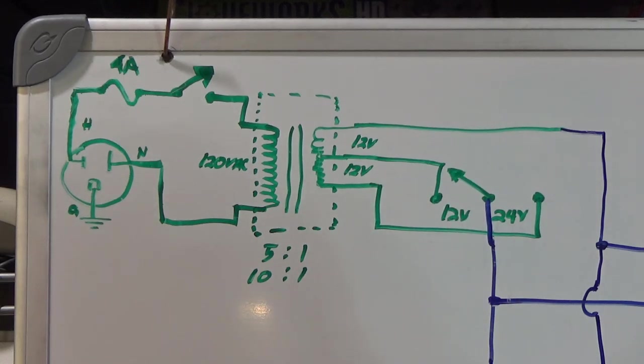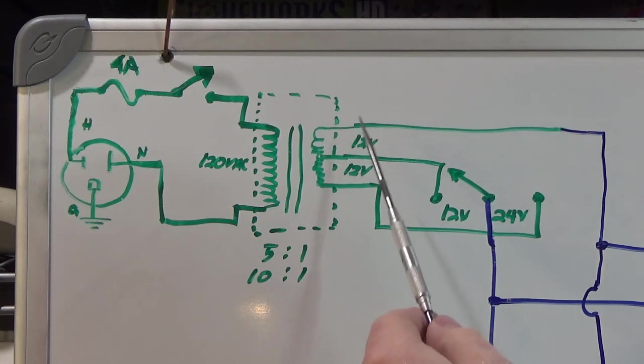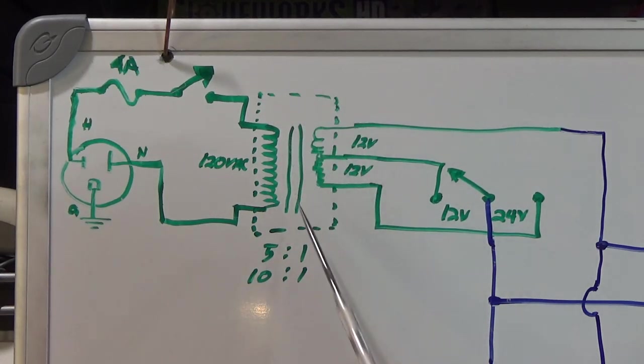It's a center tap transformer, which means basically if I had 10 windings on this side, five windings in, I just attach a wire which gives me half the voltage of the overall. So this is actually two 12 volt sections on a 24 volt output of the transformer.